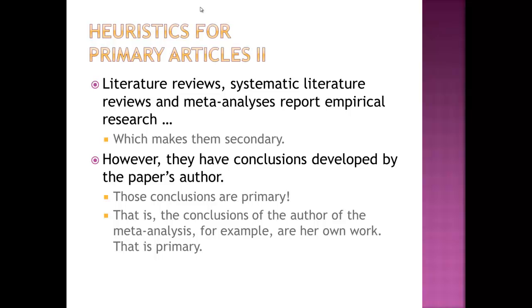Another wrinkle in the heuristics for primary articles: literature reviews, systematic literature reviews, and meta-analyses report empirical research — they talk about other people's research, making them secondary and non-primary. However, they also have conclusions developed by the paper's author, and those conclusions are primary. So we could say that literature reviews are both secondary and primary. Most people, when talking about systematic literature reviews and meta-analyses, will ultimately classify these as secondary sources.